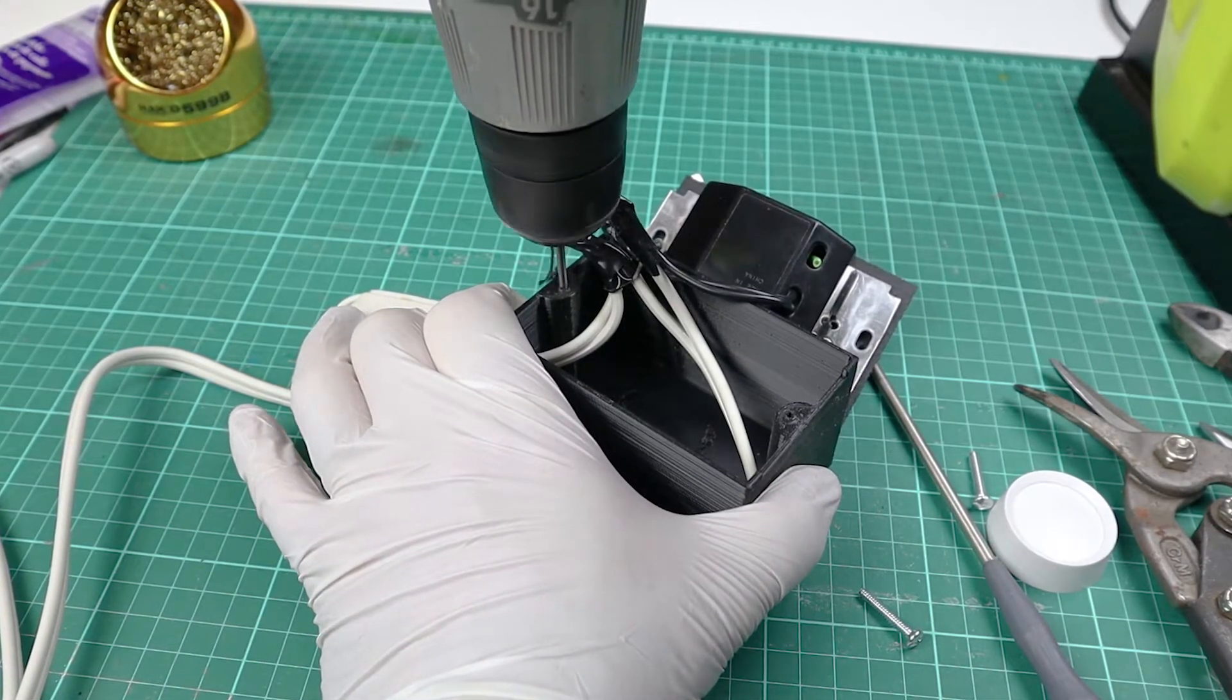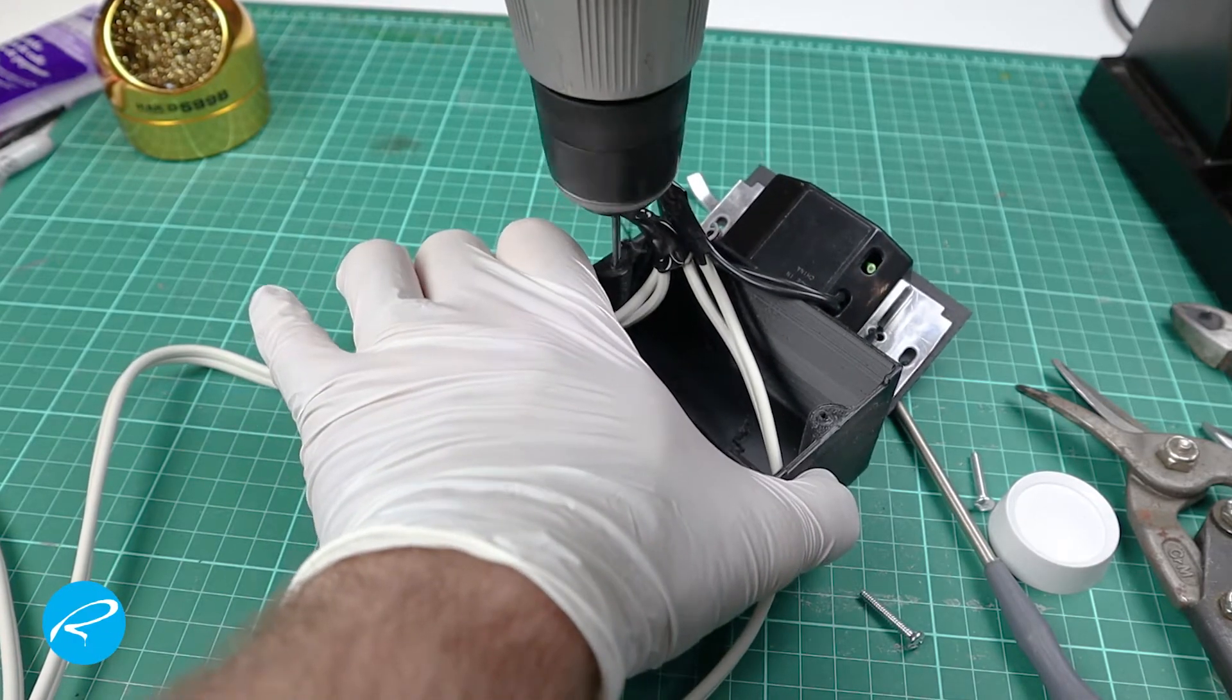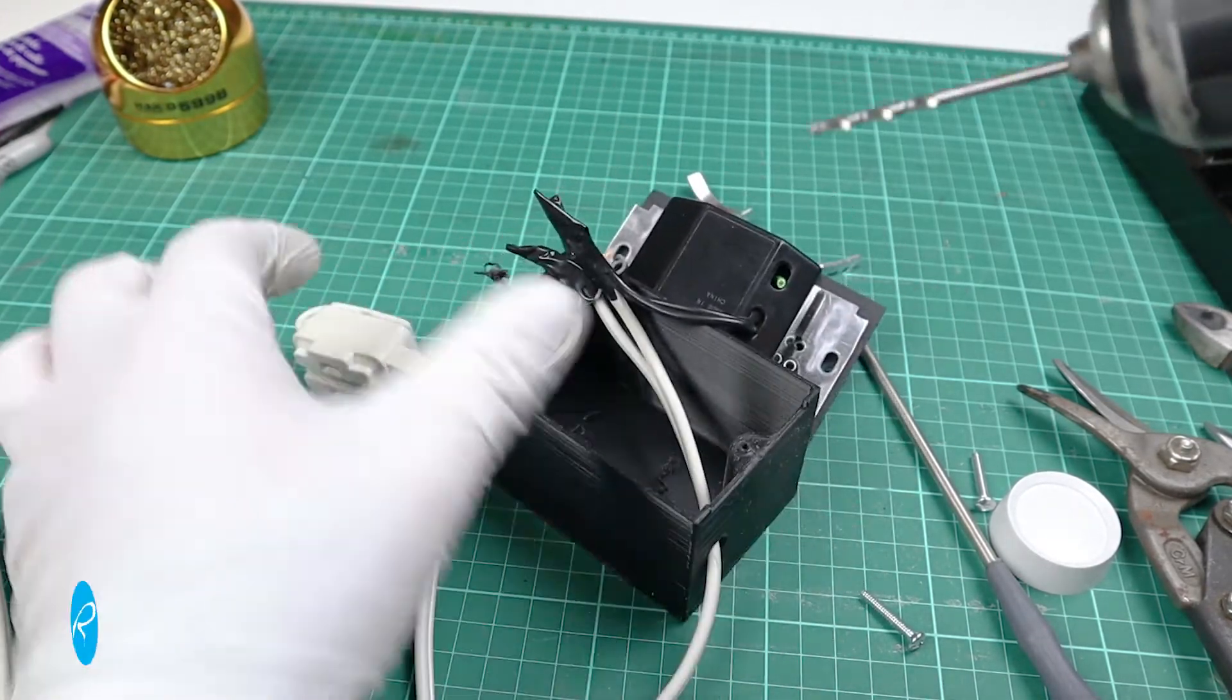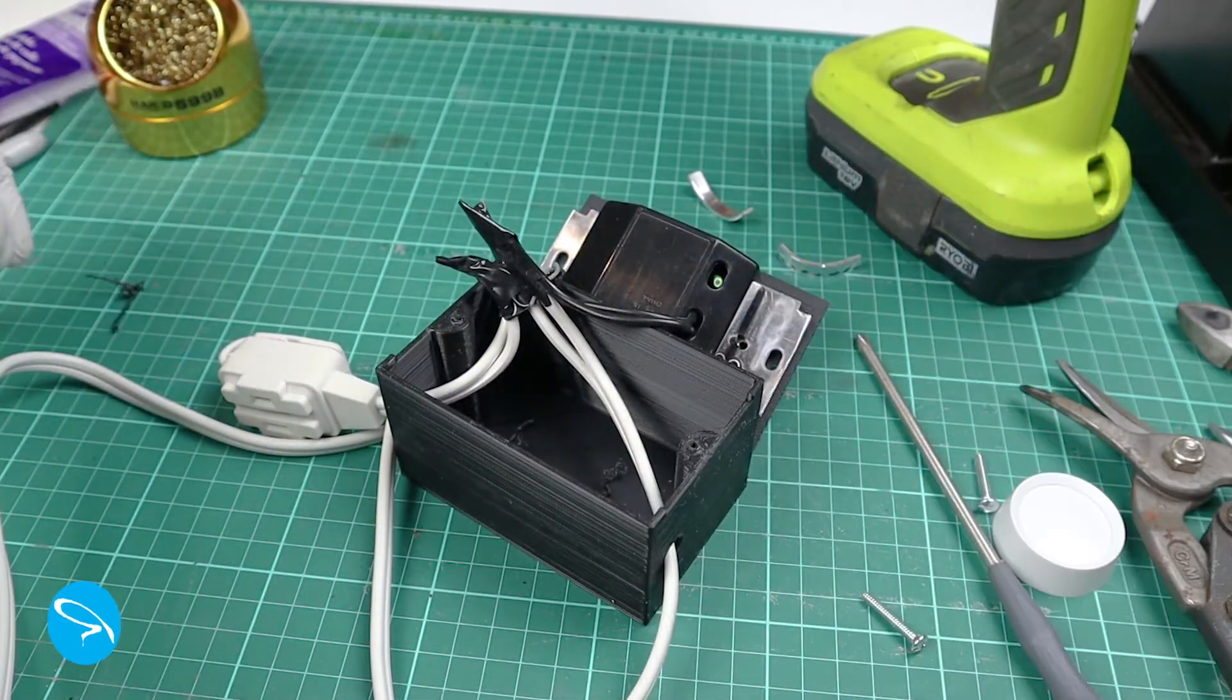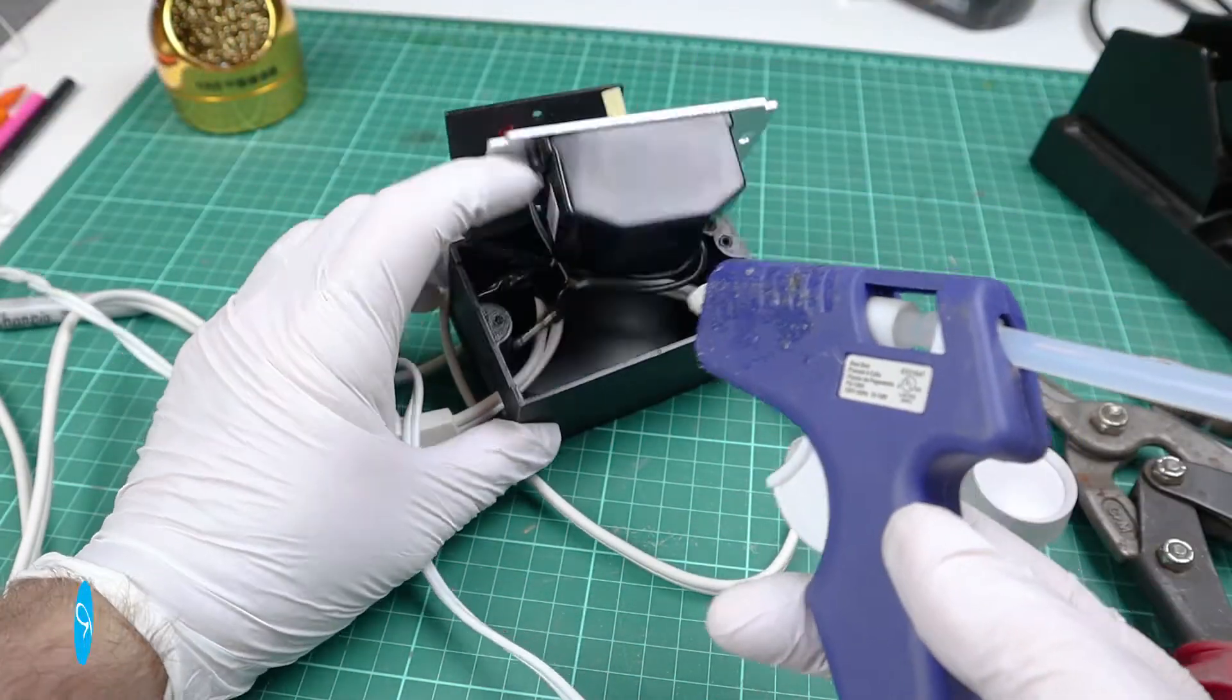I recommend going slow with the drill. It tends to want to melt its way into the plastic, rather than actually cut. Too much friction causes too much heat, and this plastic does melt at a pretty low temperature.